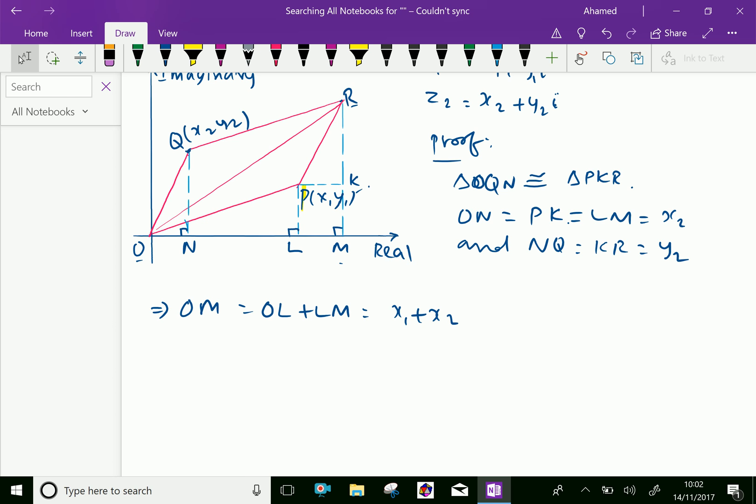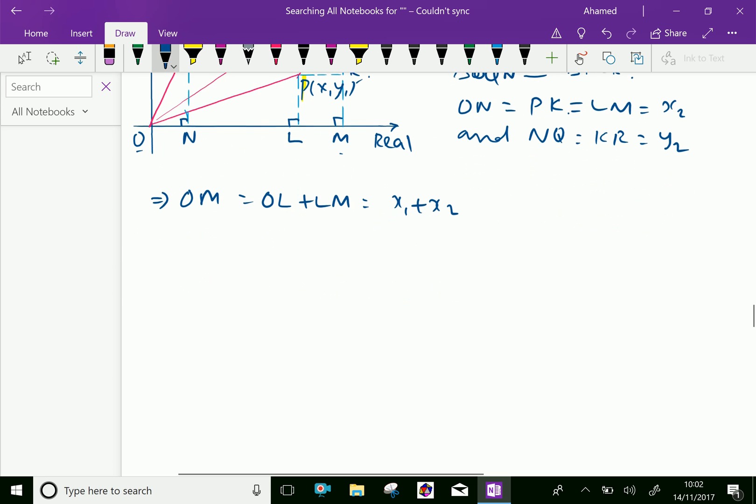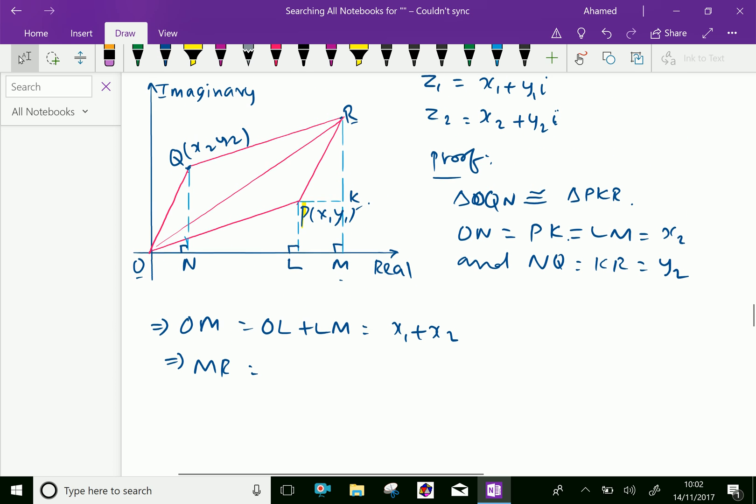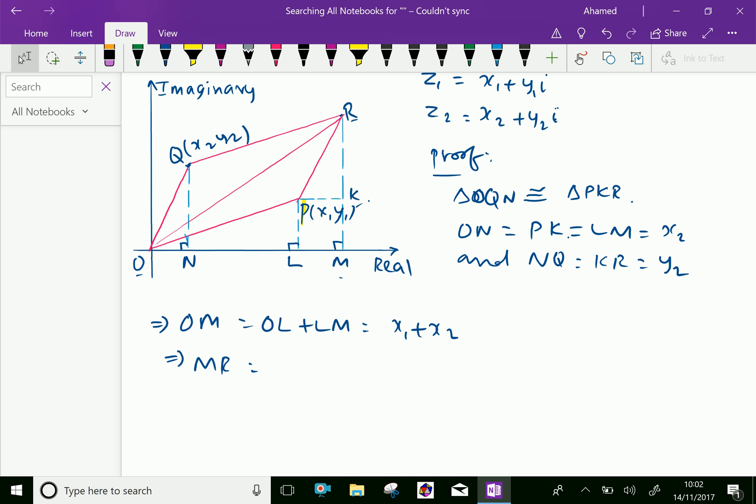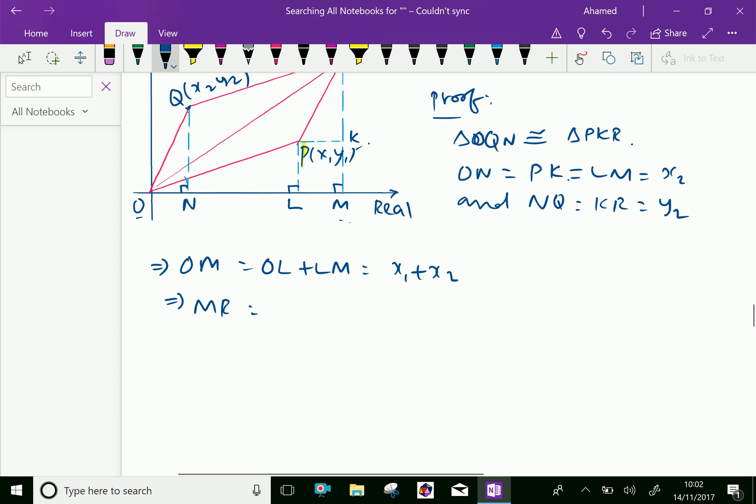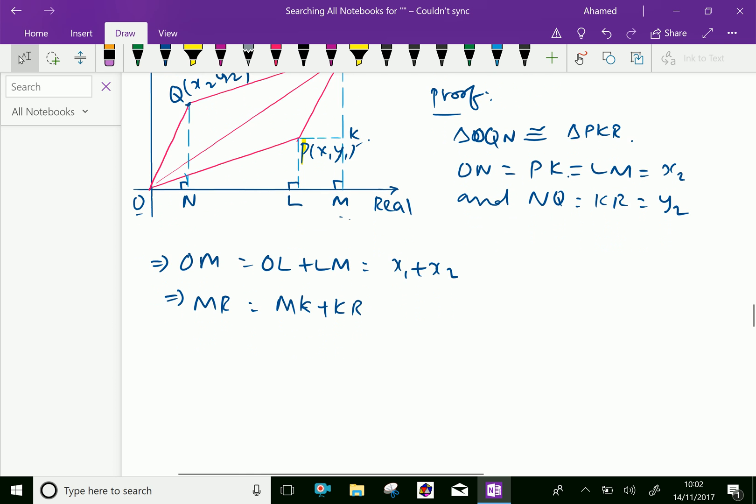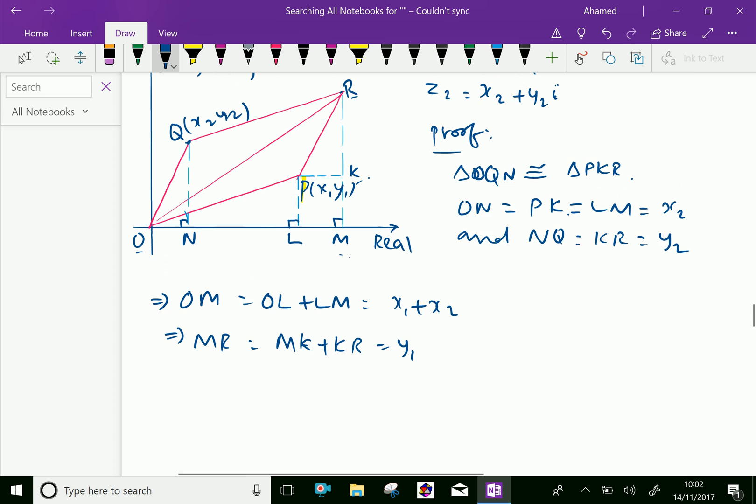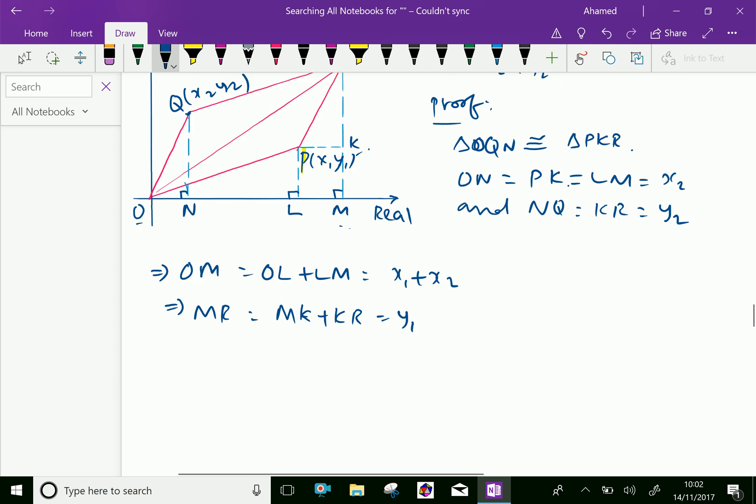Now we can say MR equals MK plus KR. Here, MK is y₁ and KR is y₂, so MR equals y₁ plus y₂.